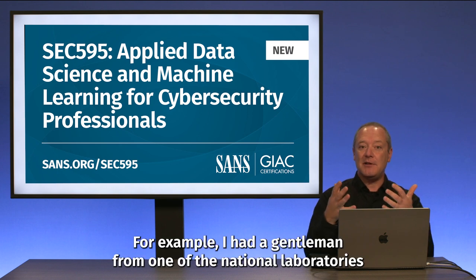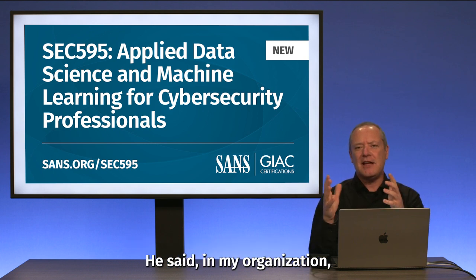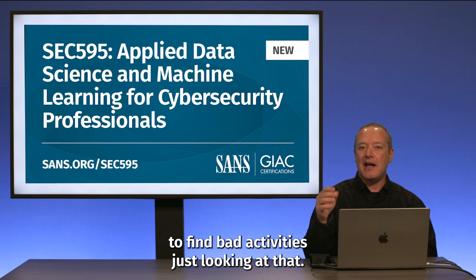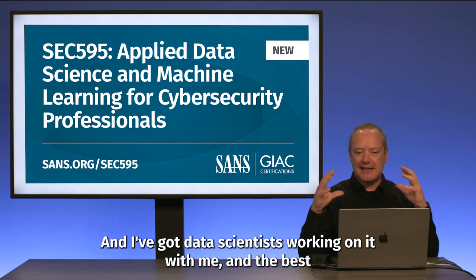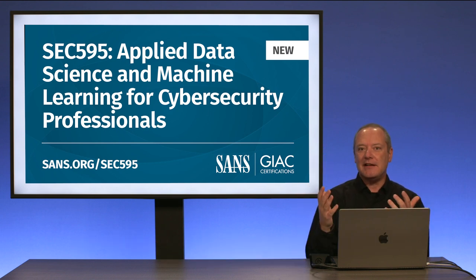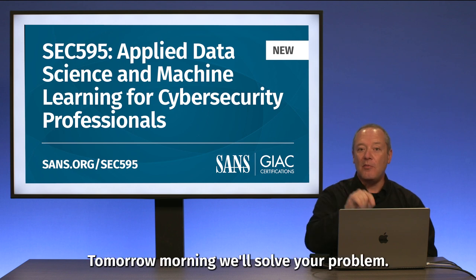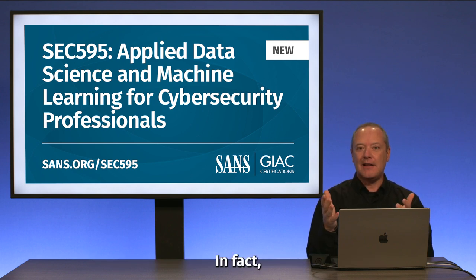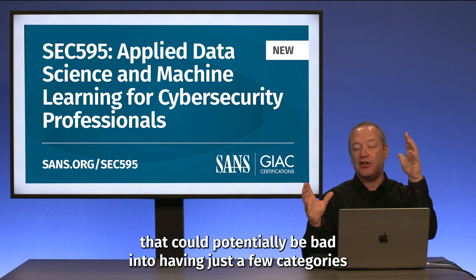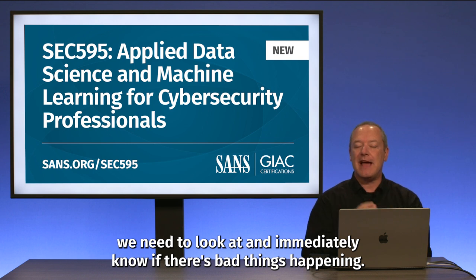For example, I had a gentleman from one of the national laboratories in the class and he told me during one of the sessions: in my organization, we're trying to figure out what's going on in our DNS queries. We feel like there's so much there and we should be able to find bad activities just looking at that. I've got data scientists working on it with me and the best we've been able to find are known bad lists. And I looked at him and said, you're working with data scientists and they're telling you to use known bad? Just wait — tomorrow morning we'll solve your problem. That problem is so easy to solve with machine learning. We can go from having vast numbers of things that could potentially be bad into just a few categories we need to look at, and immediately know if there's bad things happening.